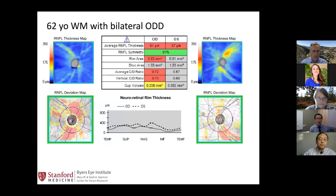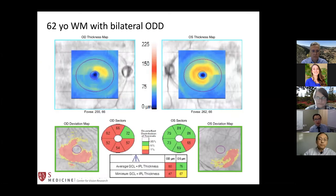His OCT also supports the diagnosis — it shows significant loss of RNFL, which is reflected by the macula GCA analysis. He has loss of inferior bundles, and the left eye in particular respects the midline. The clinical history is consistent. In my mind, there was a question of whether it was AION or glaucoma.